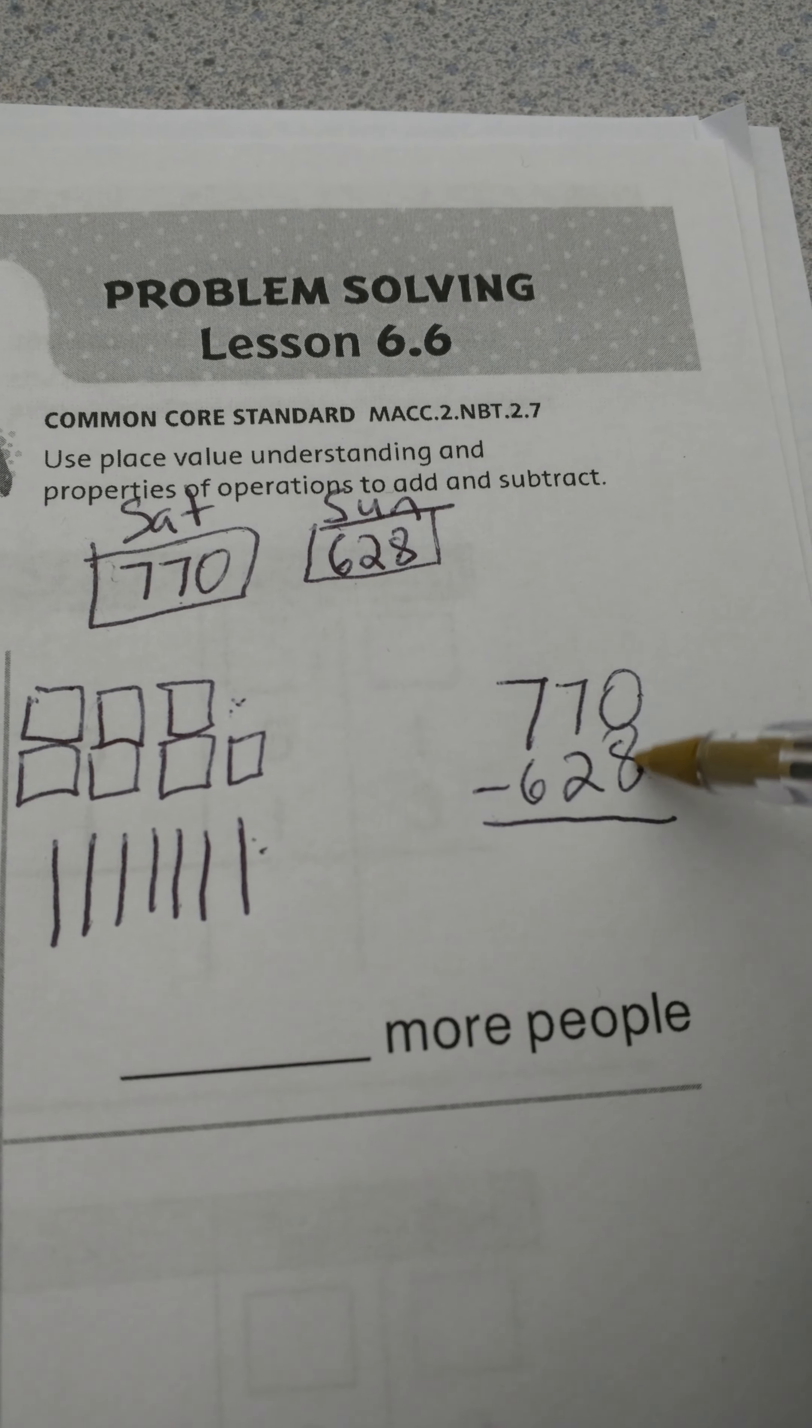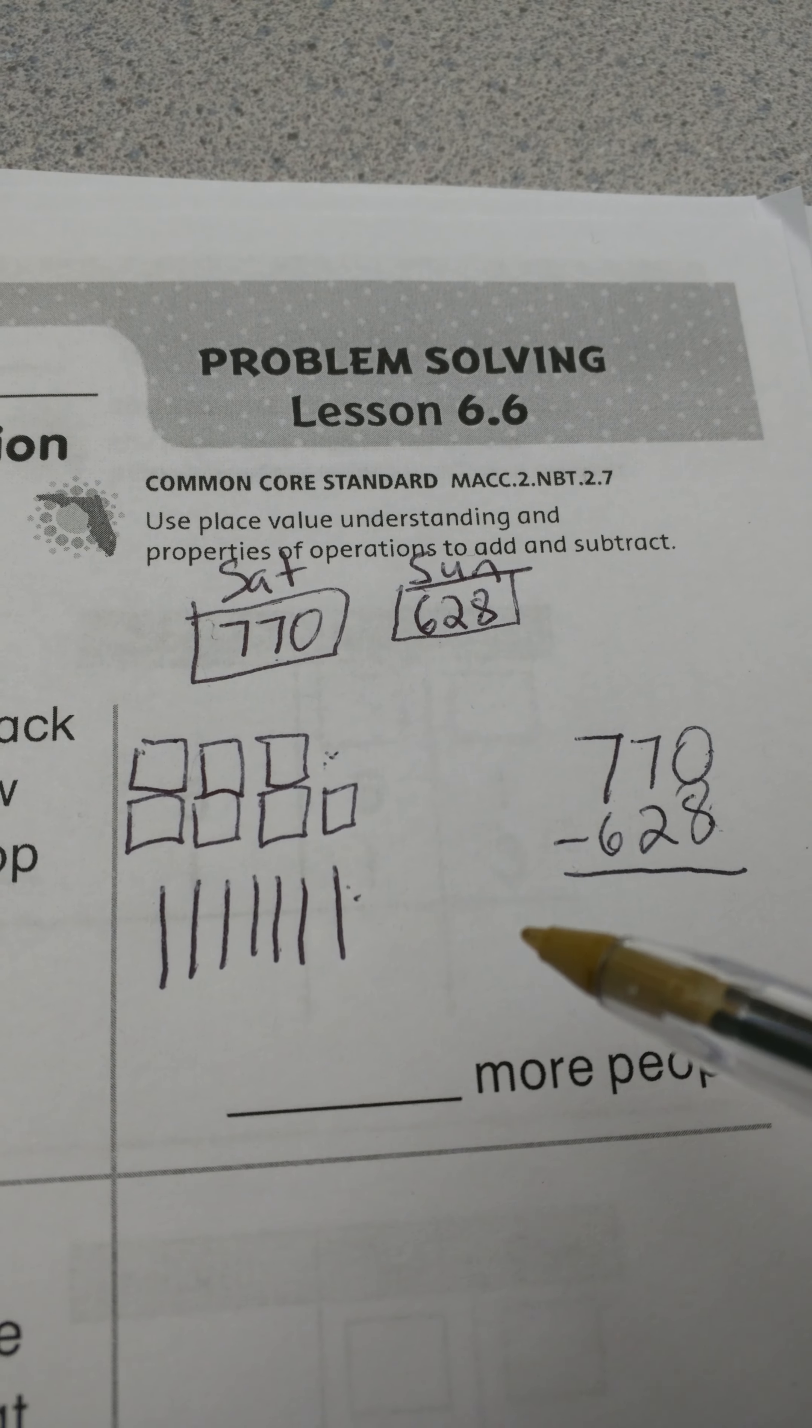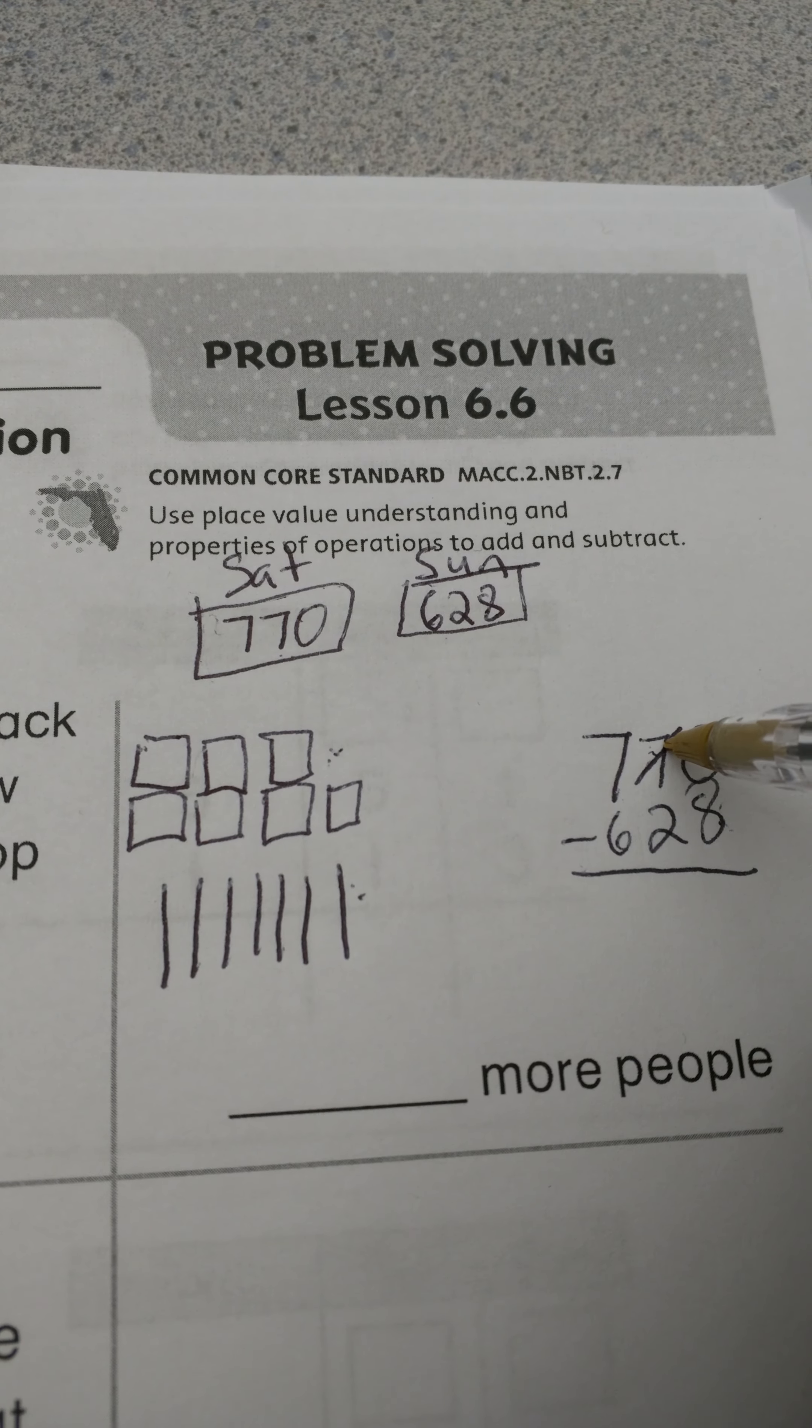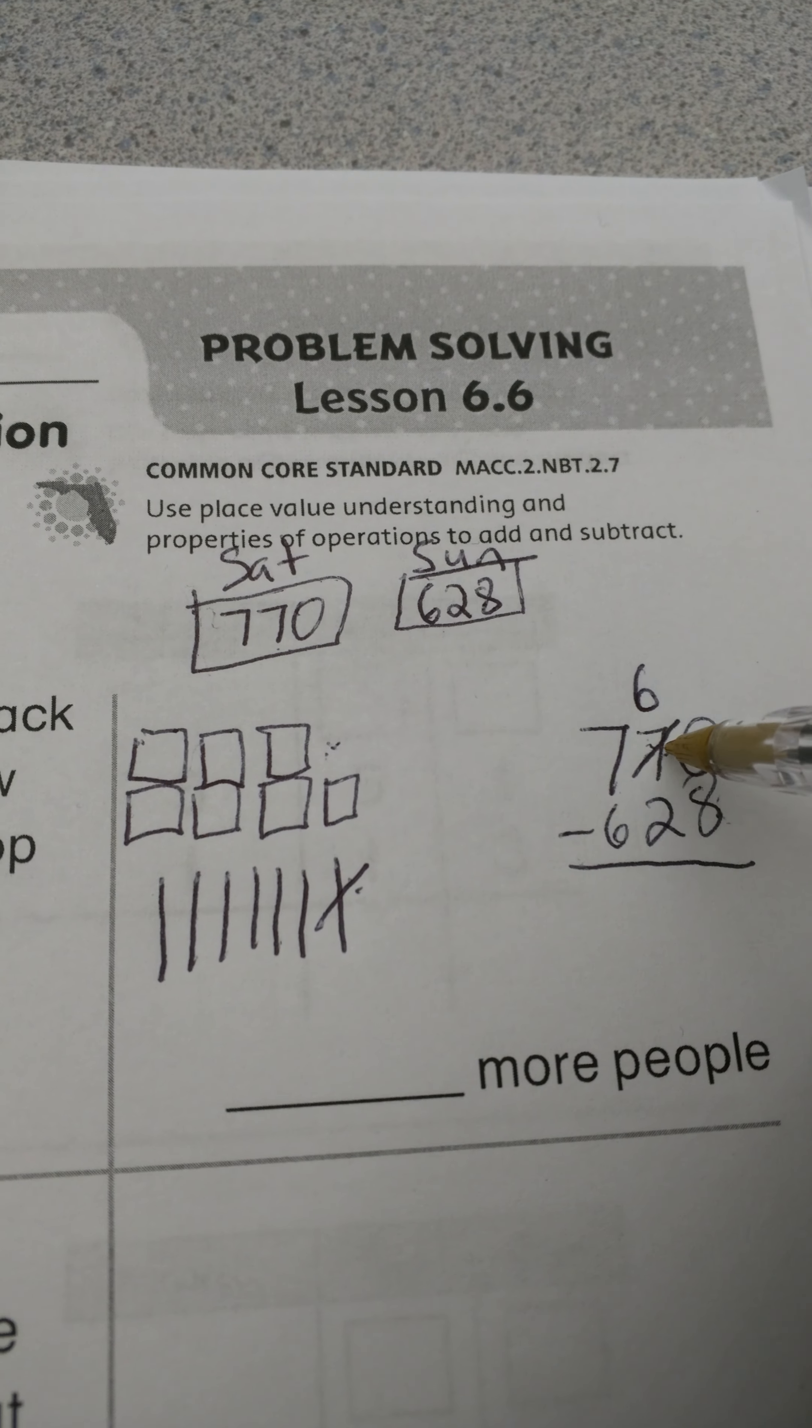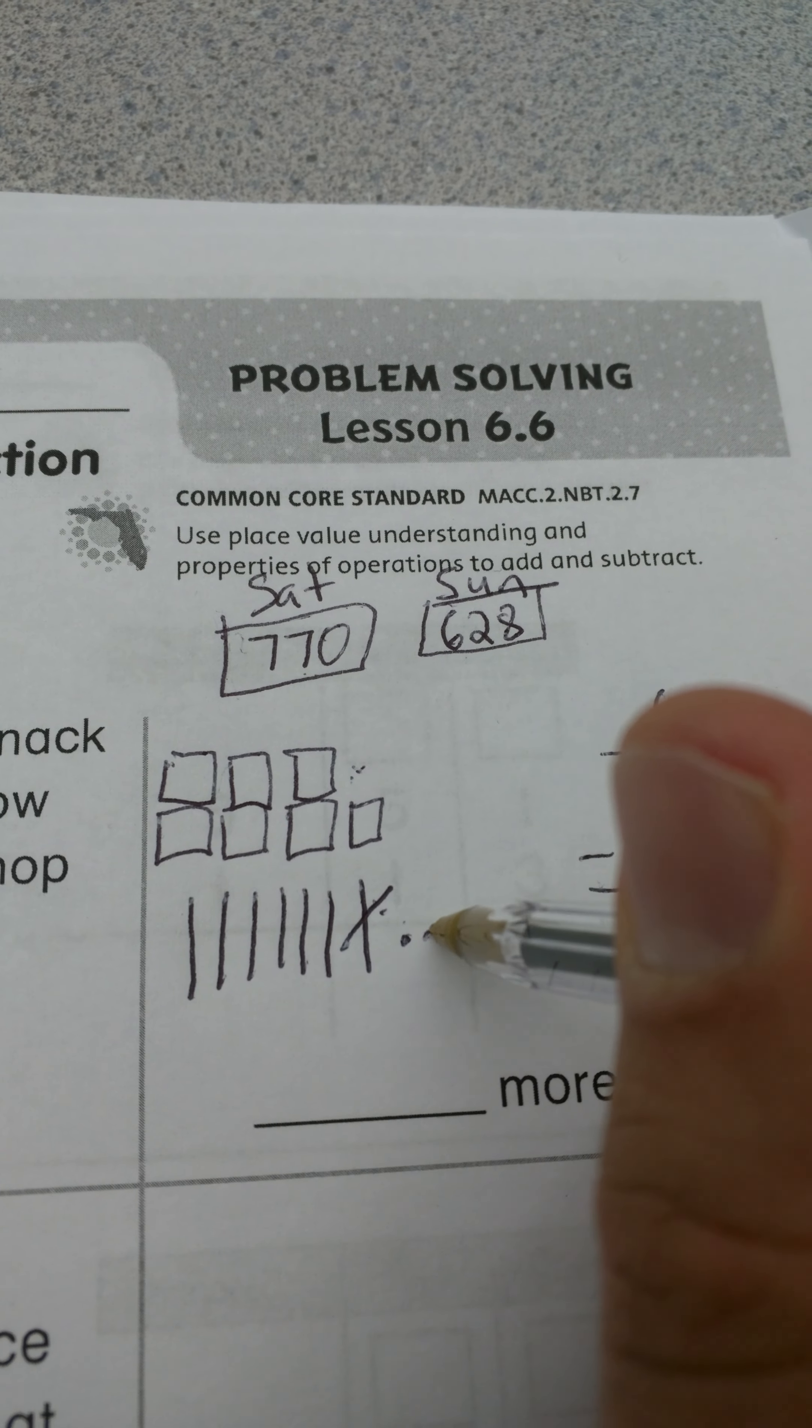If you look over here, obviously I can't take away 8 from 0 because I have zero ones here. So what I'm going to do is I'm going to regroup from the ten. I'm going to take one of the tens away. I have 1, 2, 3, 4, 5, 6, so I'm going to put 6 right here. I took one away from 7, that's 6. Now that's going to be broken up to 10 ones.